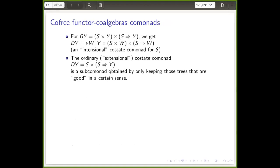We saw other examples, and the one I finished with was something we could call an intentional co-state co-monad. This provides an environment that can talk to computations in the intentional state monad. An element is a non-well-founded tree. At every node I see a node label — an element of S — which is the data value the environment is willing to give the computation if it wants to read or fetch. There is also how the environment continues, with an immediate subtree.